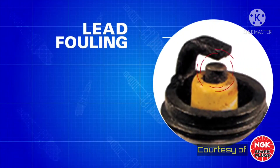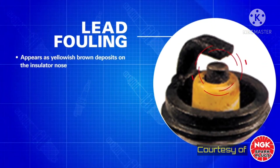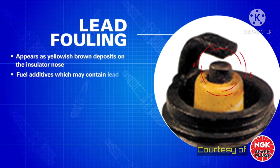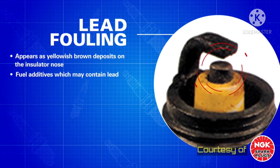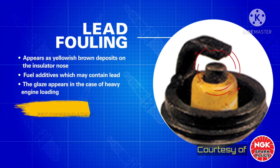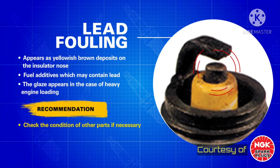Lead Fouling. Lead fouling usually appears as yellowish-brown deposits on the insulator nose. Fuel additives that may contain lead can cause the spark plug not to function properly. Avoid using fuel additives that can cause harm to the engine, check the condition of other parts, and replace if necessary.